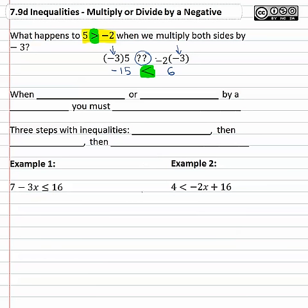What has happened is whenever we multiply or divide by a negative, you must flip the inequality.